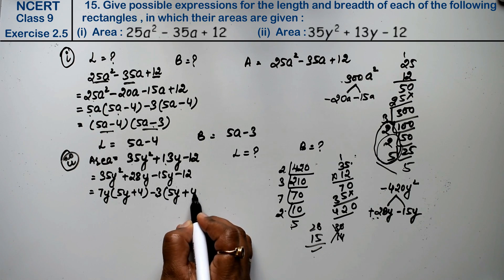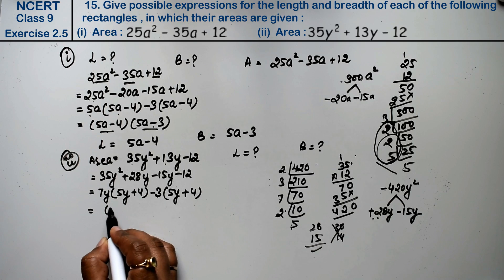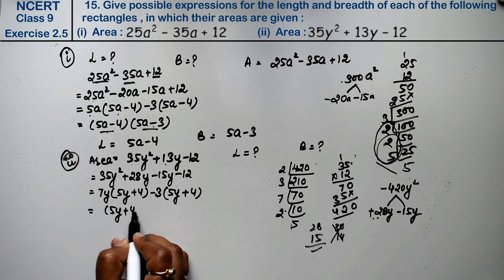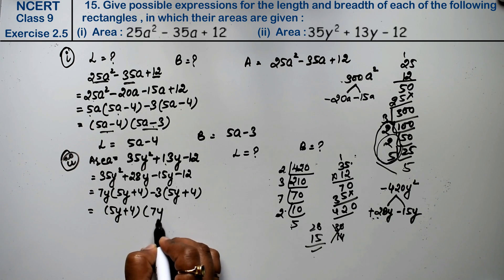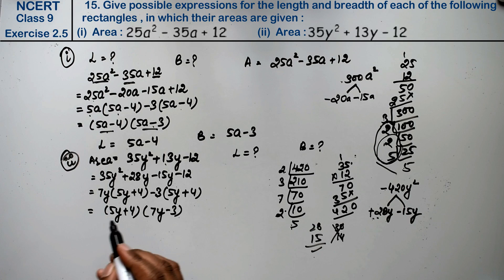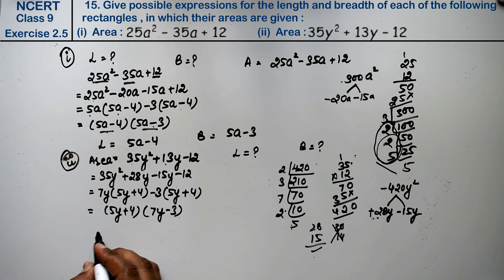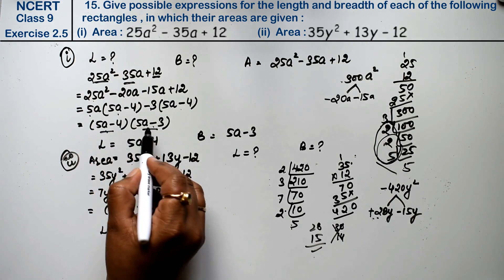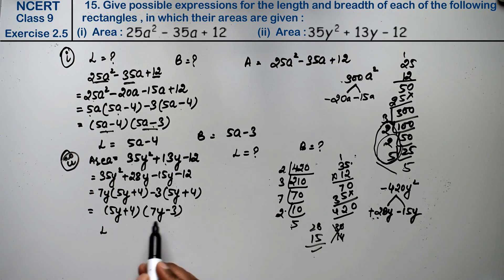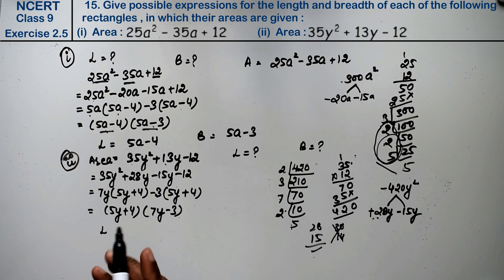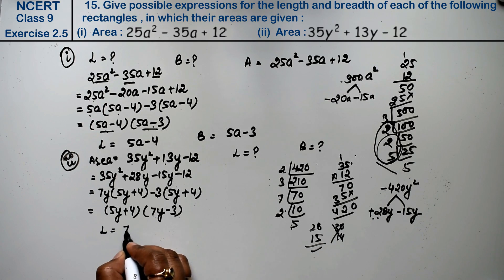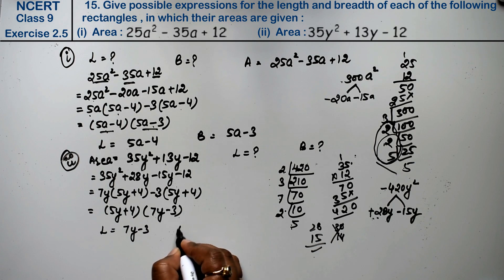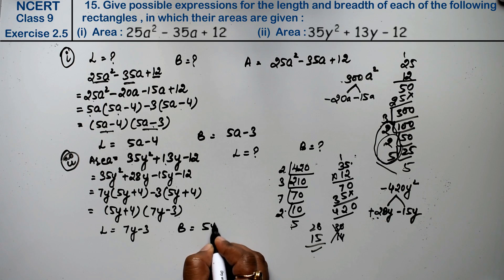Now looking at the first two terms: 7y is common, giving 5y plus 4. Looking at the last two terms: 3 is common with a minus sign, giving minus 3 times 5y plus 4. So 5y plus 4 is the common factor. The final factored form is 7y minus 3 times 5y plus 4. Therefore, length is 7y minus 3 and breadth is 5y plus 4.